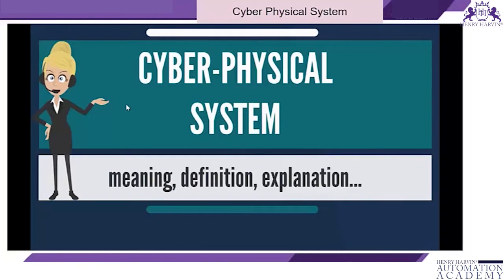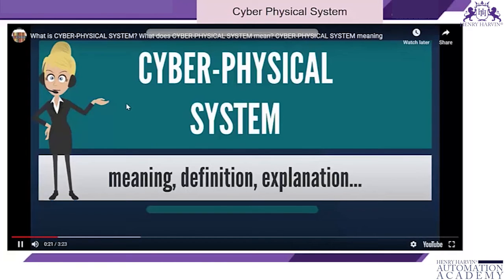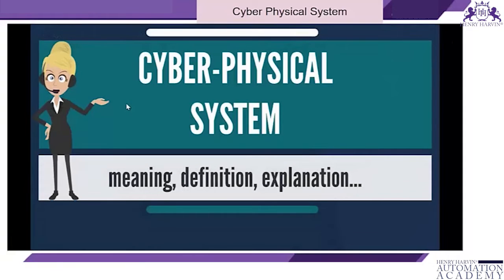A cyber physical system (CPS) is a mechanism controlled or monitored by computer-based algorithms, tightly integrated with the internet and its users. In cyber physical systems, physical and software components are deeply intertwined, each operating on different spatial and temporal scales, exhibiting multiple and distinct behavioral modalities, and interacting with each other in a myriad of ways that change with context.